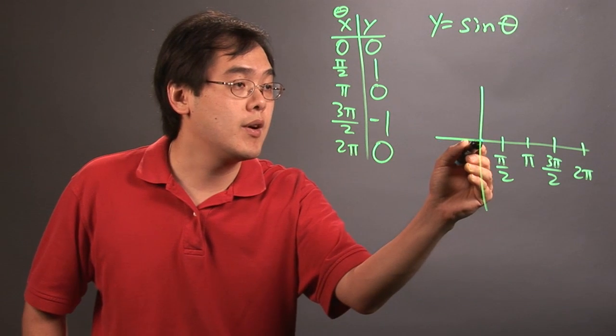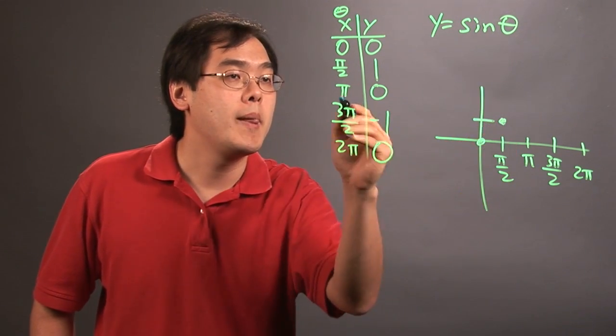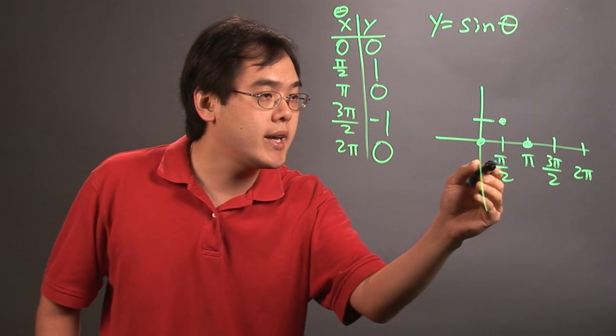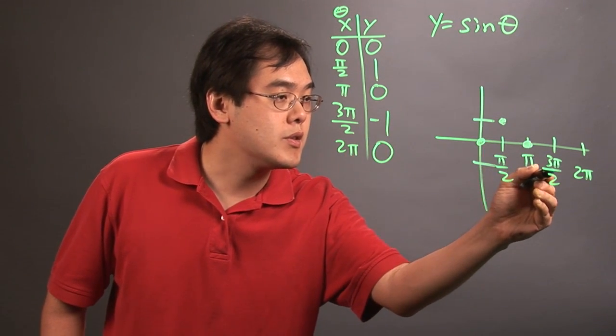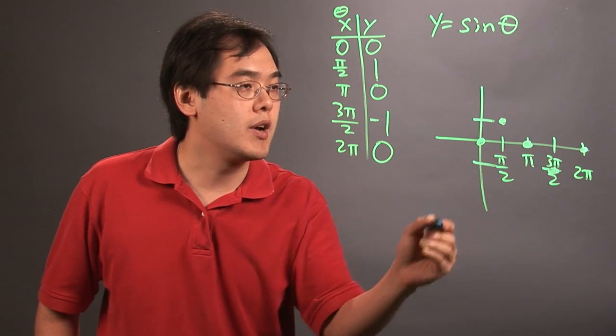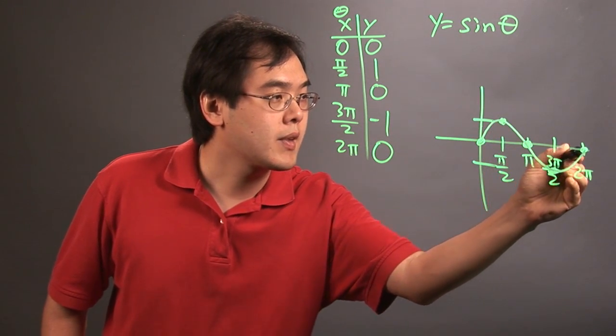So 0, 0, pi over 2, 1 is going to be like so, pi, 0 is going to be like this, 3pi over 2, negative 1 is going to be roughly about here, and then 2pi is going to be 0, and then you're just going to graph like this.